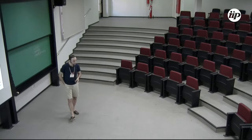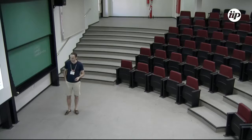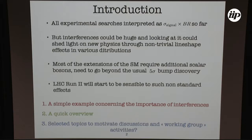Not only to tt-bar, but we will see there is a lot of complementarity with the previous talk. As an introduction, Diogo mentioned that all experimental searches so far have been done in terms of integrated cross-section — basically total cross-section times branching ratio. But as Diogo said, there are sometimes interference effects and they have a huge impact on the distribution, basically changing the line shape of the observable. Most of the time in BSM physics you require additional scalar bosons, meaning you have to find something beyond a five-sigma bump discovery. LHC Run 2 is actually a real starting point for this kind of analysis, because you will start to be sensitive to such small effects like interference.